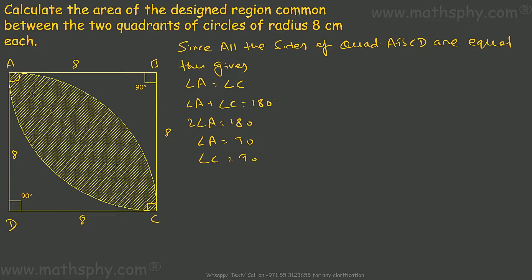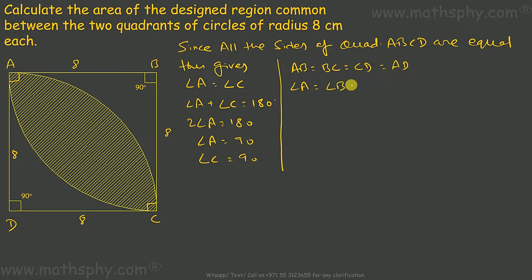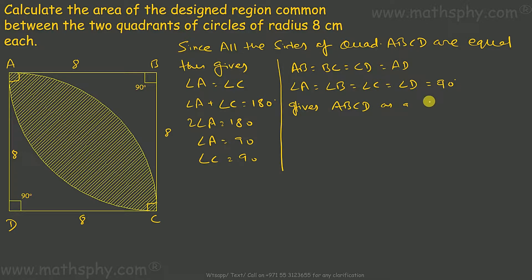When we have all 4 angles as 90 degrees and all 4 sides equal to each other, that gives ABCD as a square. AB equals BC equals CD equals AD, and angle A equals angle B equals angle C equals angle D equals 90 degrees. So ABCD is a square.